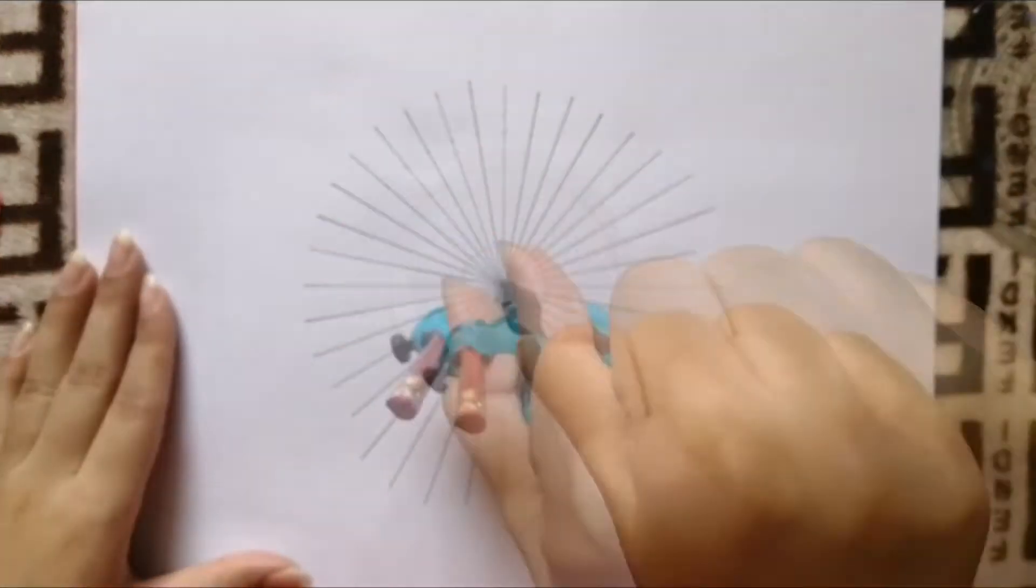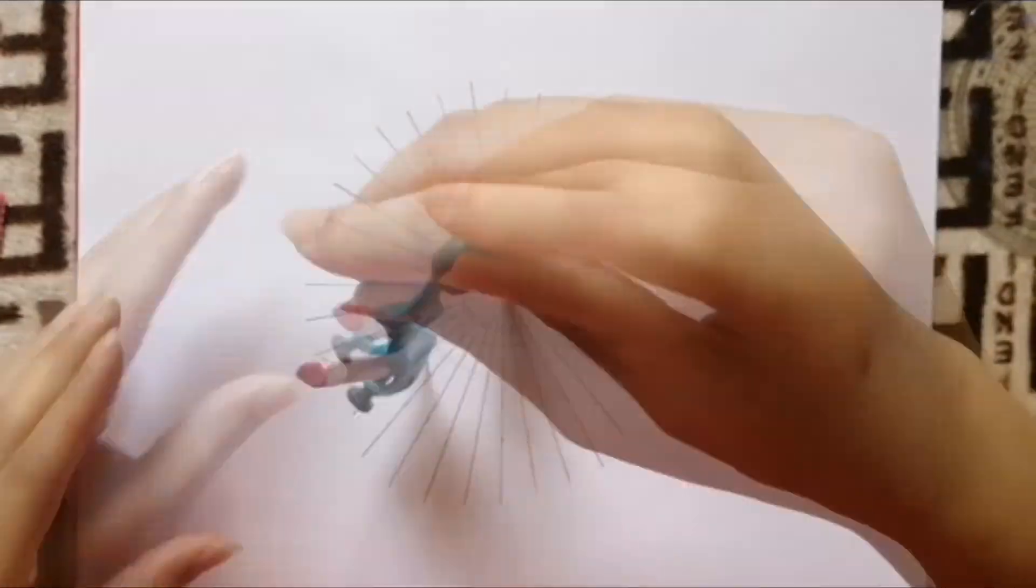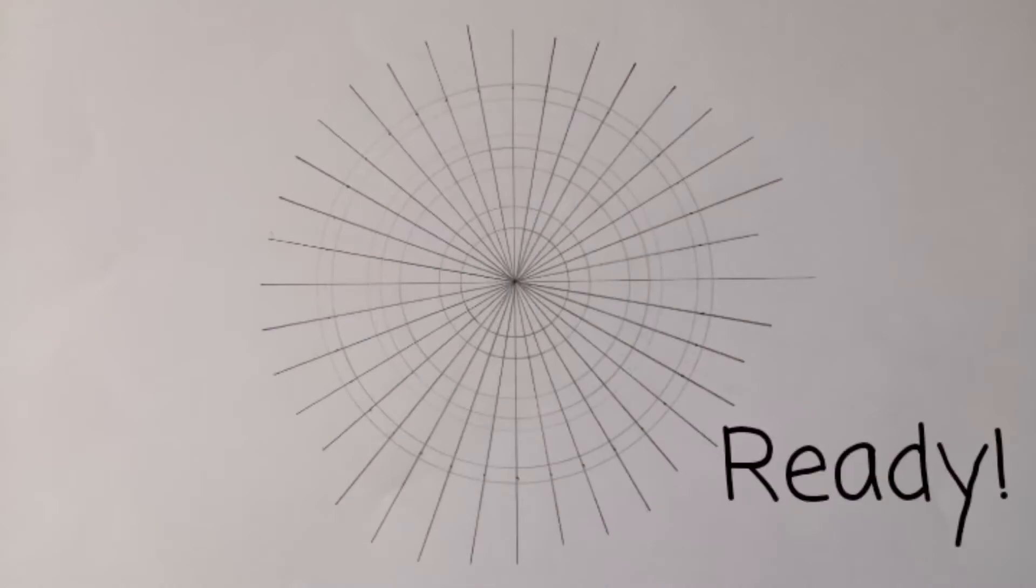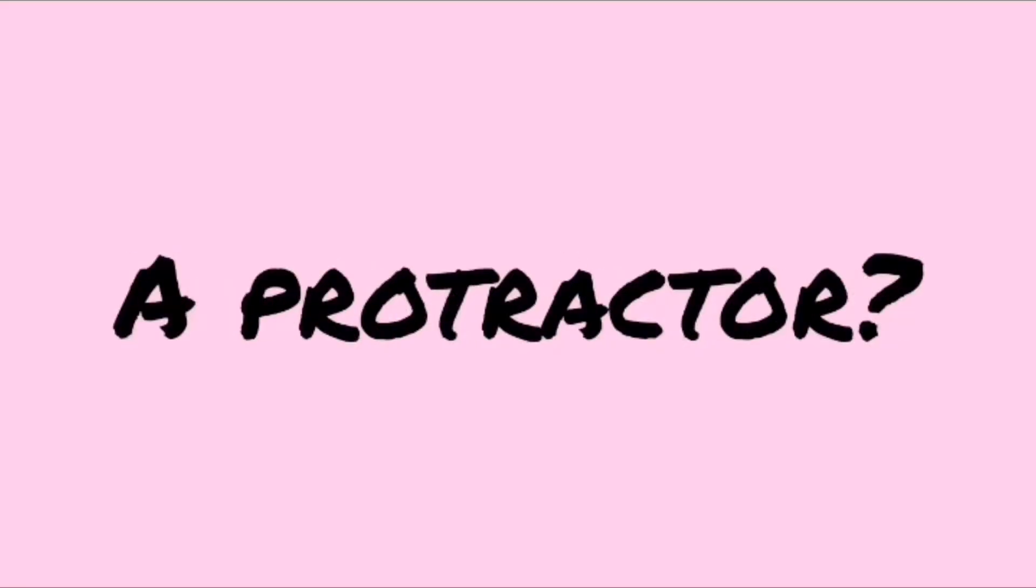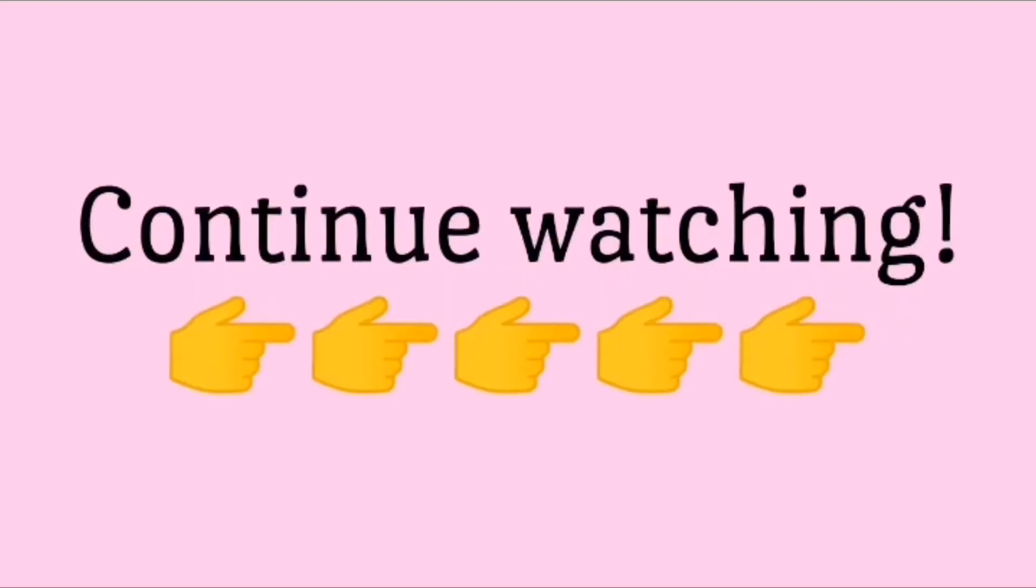Then draw circles using a compass according to your plan for drawing designs. And here you go, your grid is ready. But what if you don't have a protractor? Then continue watching this video.